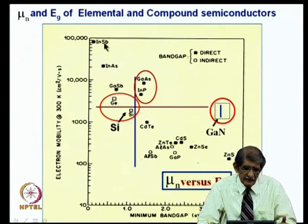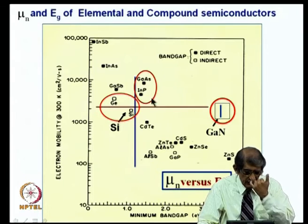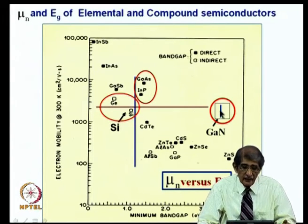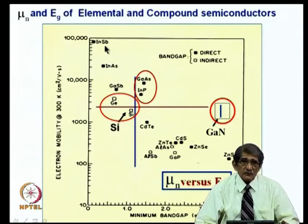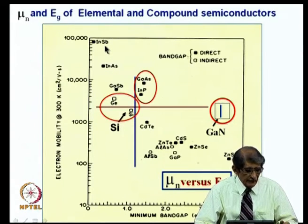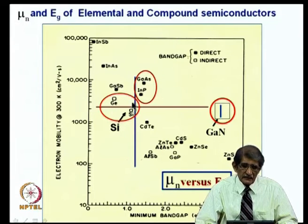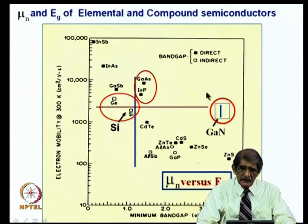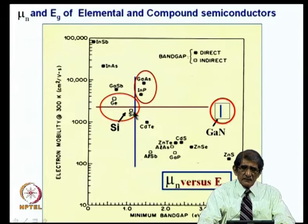For example, indium antimonide, indium arsenide, gallium antimonide, germanium, gallium arsenide, indium phosphate, including gallium nitride recently. Now, it is not enough if the mobility is high. They should also have a fairly decent bandgap, preferably higher than that of silicon or at least close to it. If you take materials which have bandgap higher than silicon, you have gallium nitride, but mobility not much higher compared to silicon's ideal value.